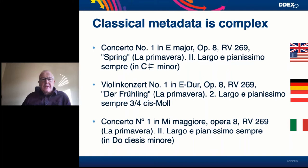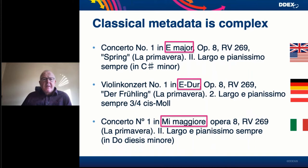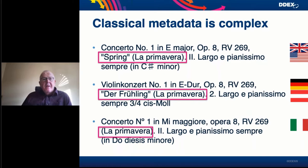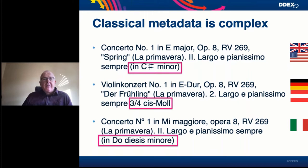The core terminology can also vary by language. Looking at one movement from the Four Seasons: in English it's 'Concerto Number One,' in German it is 'Violin Concert Number One,' and in Italian it says 'Concerto Numero Uno.' The same applies to everything else — the key of the piece is expressed differently in different languages, opus and musicologist numbers are expressed slightly differently, titles obviously differ across languages, the numbering of movements may be done differently, and keys are also expressed in different ways.